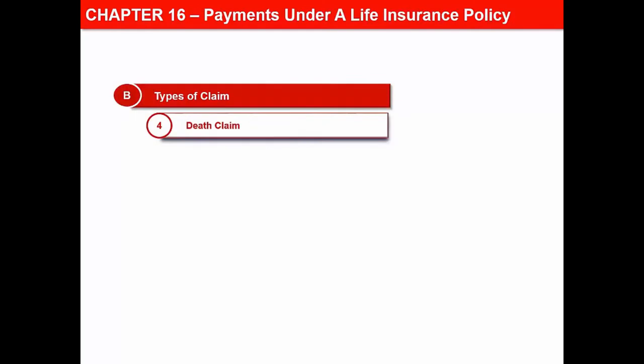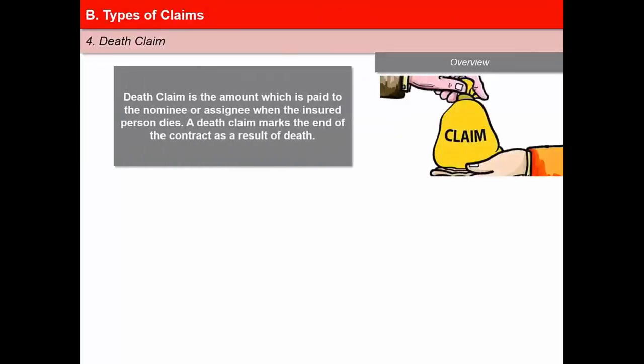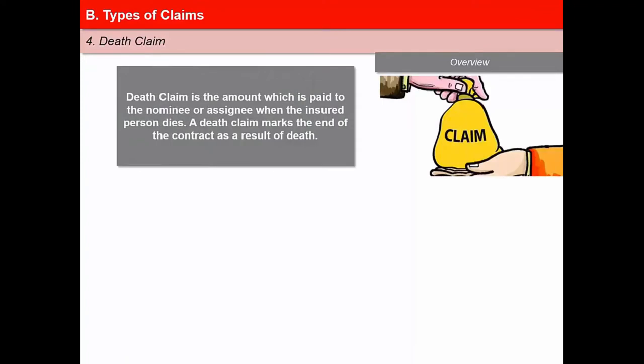In this next video of the lesson, Payments under a Life Insurance Policy, we will learn about death claim. Death claim is the amount which is paid to the nominee or assignee when the insured person dies. A death claim marks the end of the contract as a result of death. The procedure for settling a death claim is relatively complex as compared to maturity claims.